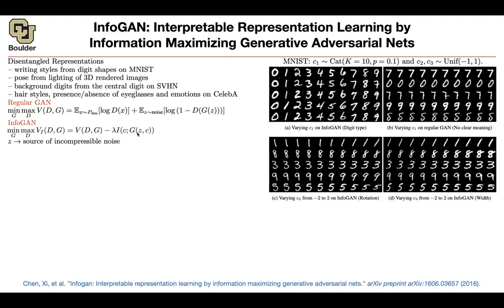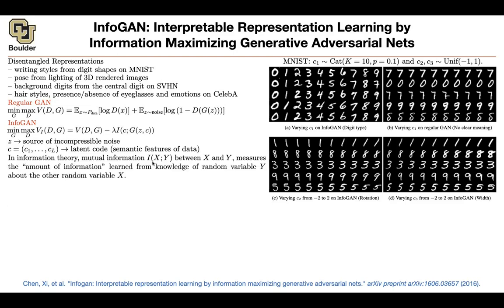But what is that I, and what is Z? Z is a source of incompressible noise — you are not going to be able to control it, so those entries are going to be entangled with no interpretable meaning. This gives the model some freedom. Then for the Cs, you want disentangled meaning: you want C1 to have a different meaning than C2, than C3, than CL. These are your latent codes with semantic features of your data. And I is the mutual information between two random variables.